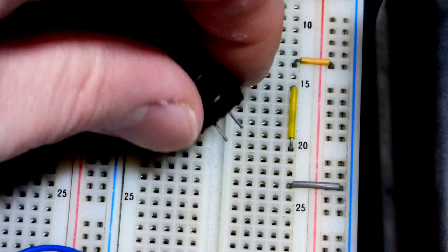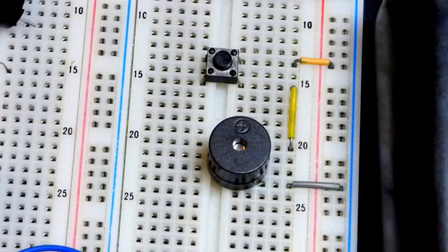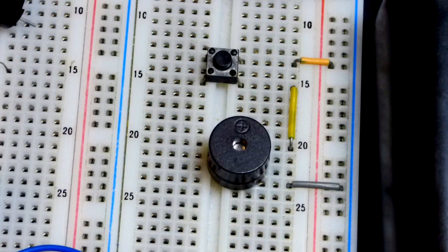So in any case, that's how I can tell the difference between these two. So I'm going to plug it to the power supply. The active buzzer is the simpler one right there.